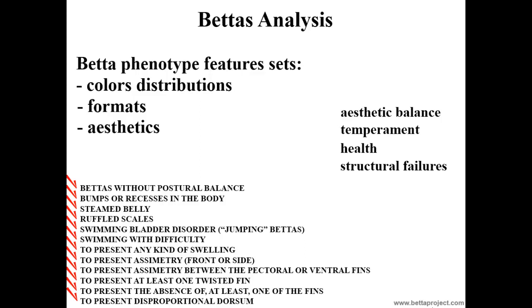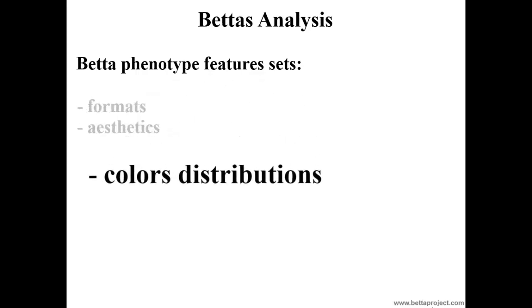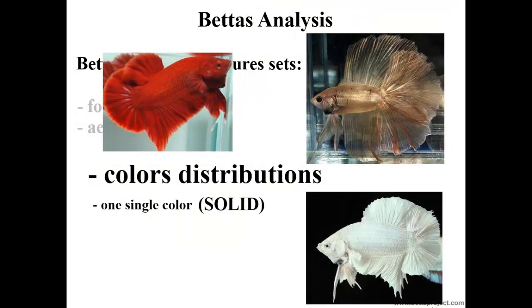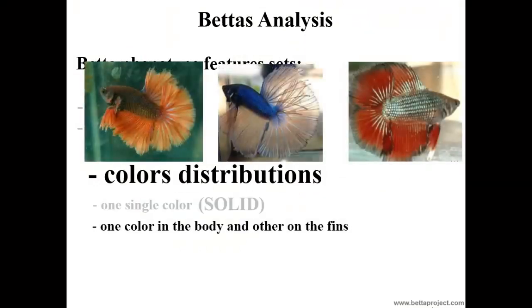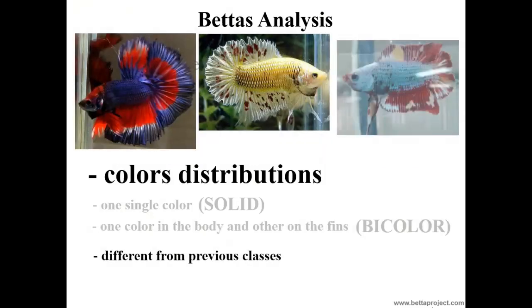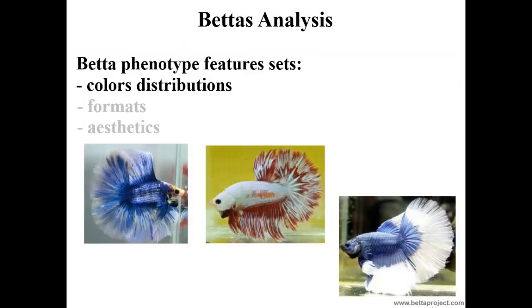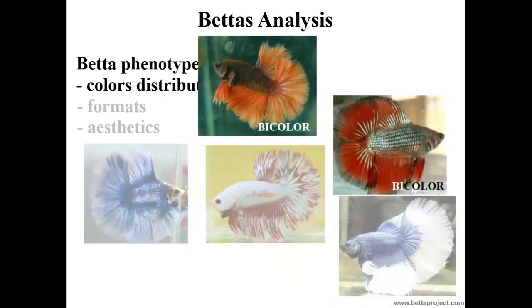We will initially talk about color distributions in BETAs. BETAs can have a single color — the so-called solid. They can have one color on the body and another on the fins — the so-called bicolor. And they can have a color distribution that does not fit either of the previous two classifications — the so-called multicolored. Note that a BETA with two colors may not be a bicolor if those colors are scattered throughout, mixed on the fins, or have a butterfly arrangement. By exclusion, those will fit in the multicolored class.